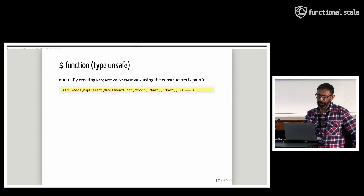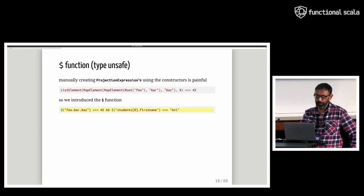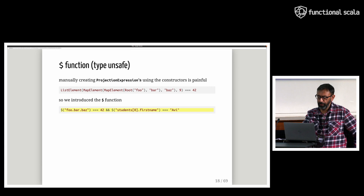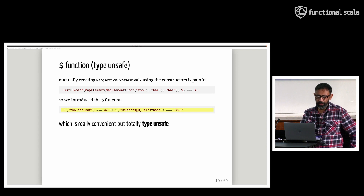Manually creating projection expressions using the constructors is painful, as this leads to deeply nested code. So we introduced the $ function, which takes a string path expression and returns a projection expression — inside the function it calls the constructors we saw earlier. All this is really convenient, but it's totally not type-safe.